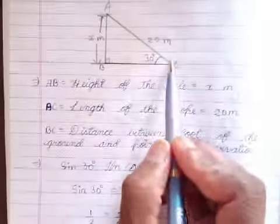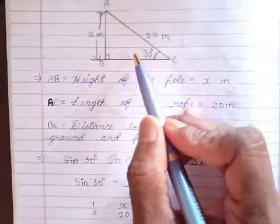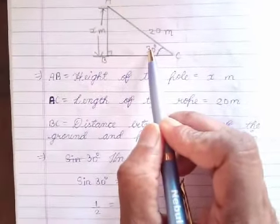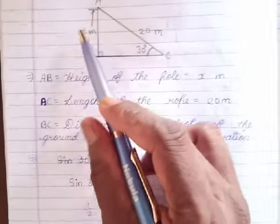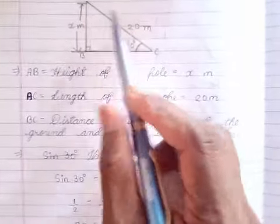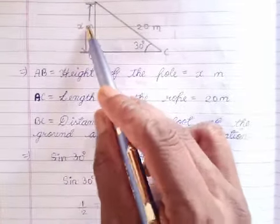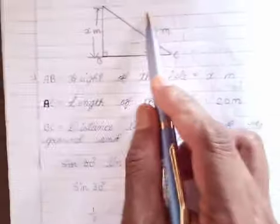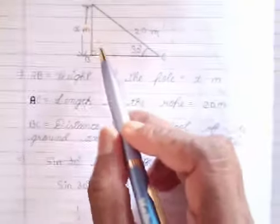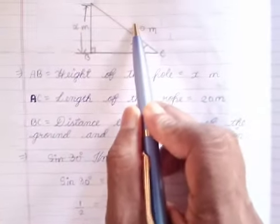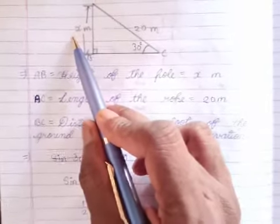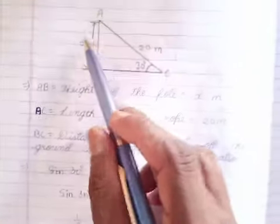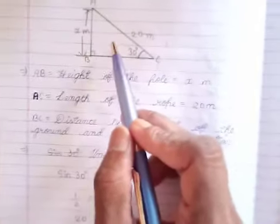In triangle ABC, we need to identify the correct trigonometric function. What we want to find is AB, which is opposite to 30 degrees — that is P. What is given is AC, the hypotenuse — that is H. So the relation between what is given and what we need to find is P by H, which equals sine theta.